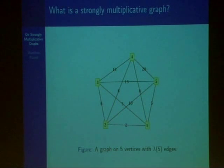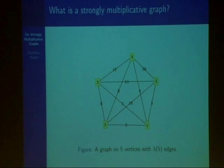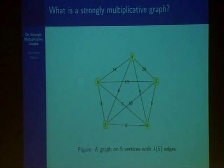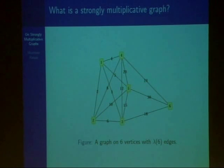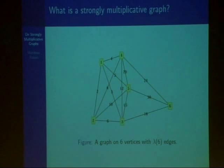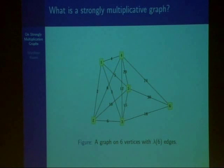Our problem essentially deals with the maximal number of edges that can be constructed on a strongly multiplicative graph with n vertices such that no two edges have the same edge label. In the case where n equals five, all possible edges can be constructed. So lambda of five, which denotes the maximal number of edges on a strongly multiplicative graph with five vertices, is five choose two, or ten. But if we look at the example for six, we notice that some of the edges cannot be constructed, since we already have edge labels of six and twelve. So lambda of six is thirteen.